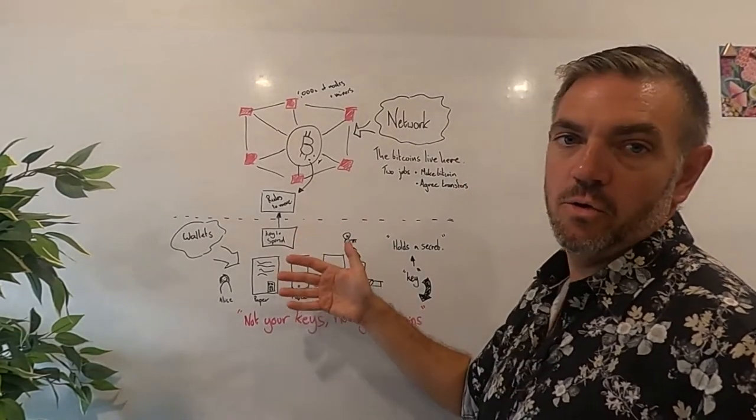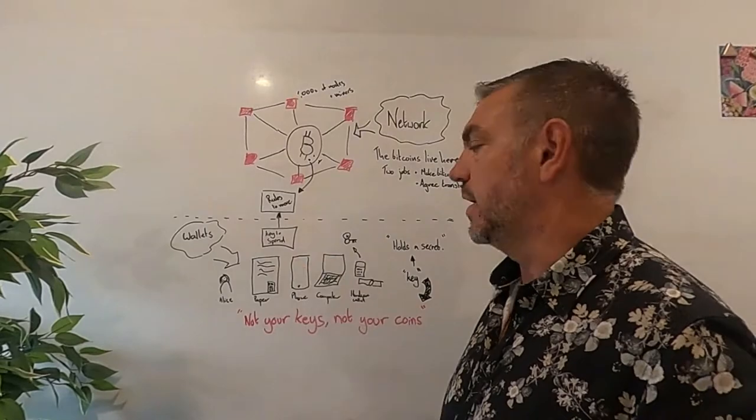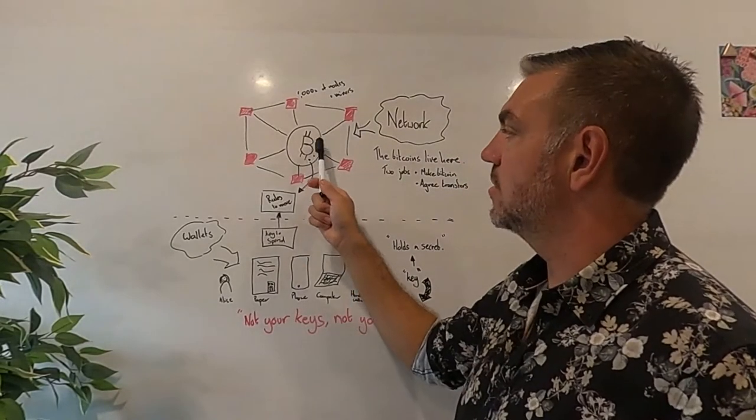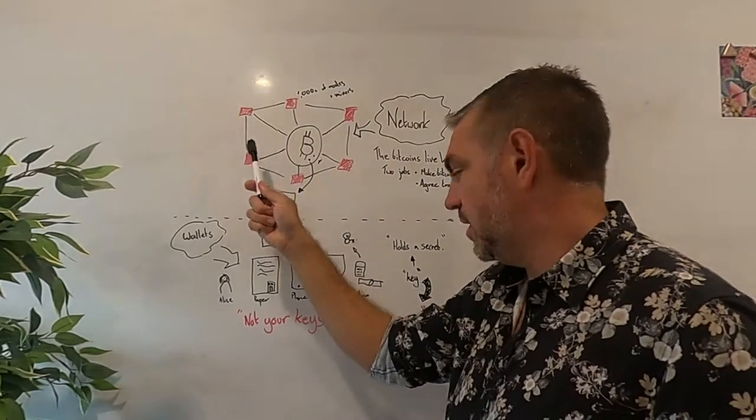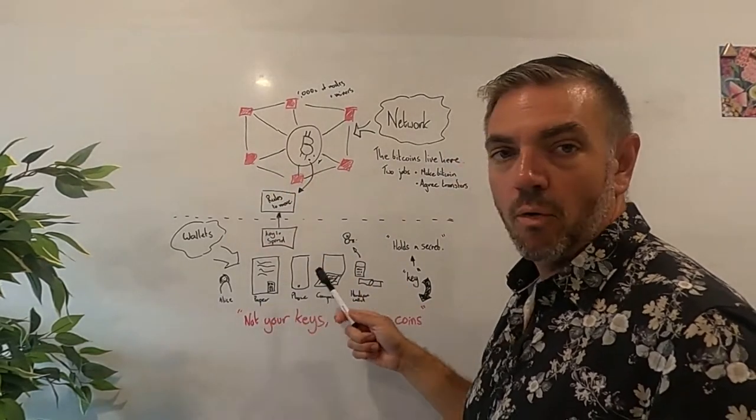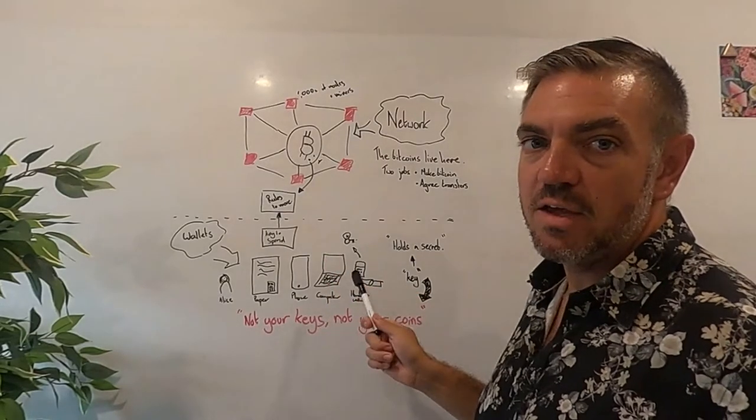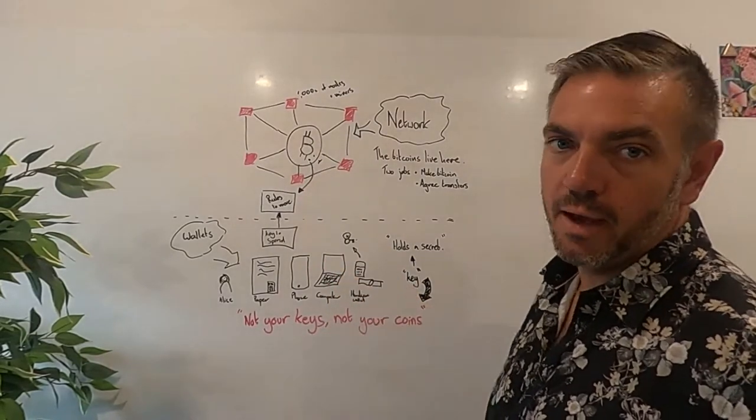This is what it means to own a Bitcoin. It's that you own a particular secret that will allow you to spend a Bitcoin on this network. It doesn't move from this network. It never sits on paper or a phone or a computer. It's just that you have the secret that can move it on the network.